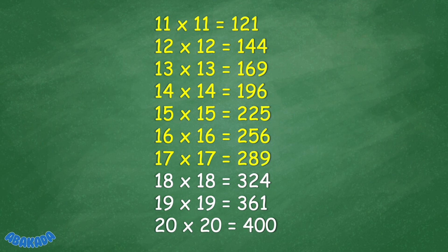18 times 18 equals 324. 19 times 19 equals 361. 20 times 20 equals 400.